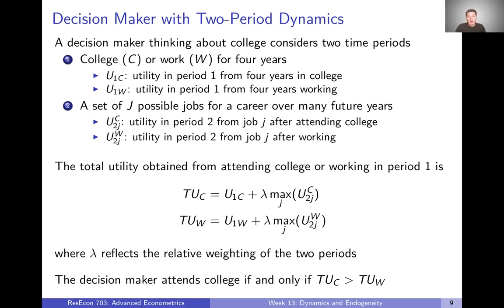Let's think about a decision maker thinking about either going to college or working, but we're going to consider two time periods. First, they think about: do I want to go to college or work for four years? If they go to college in the first period, they get utility U1C — utility in the first period from going to college. We can think of an individual subscript on all of this, but I'm leaving it out to reduce notation. If they went to work instead for four years, they'd get utility U1W — utility in the first period from working.